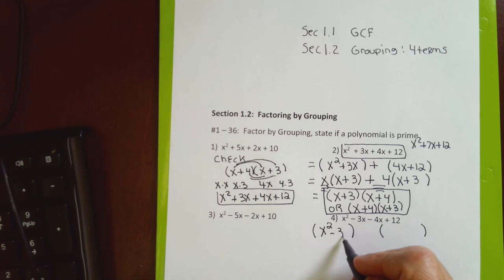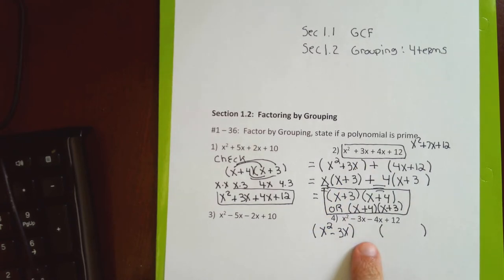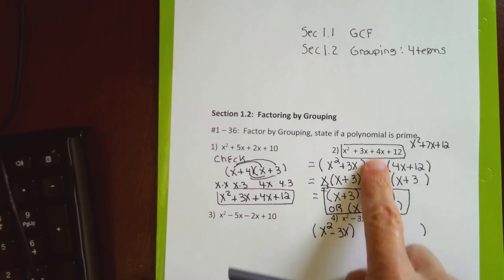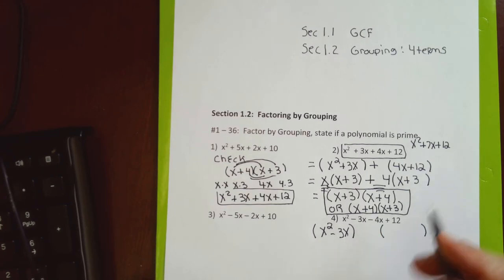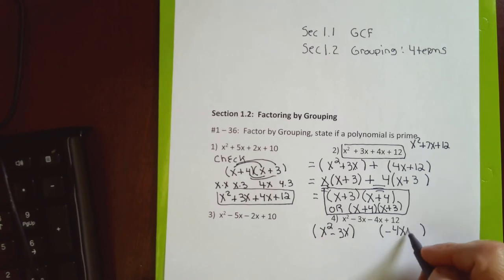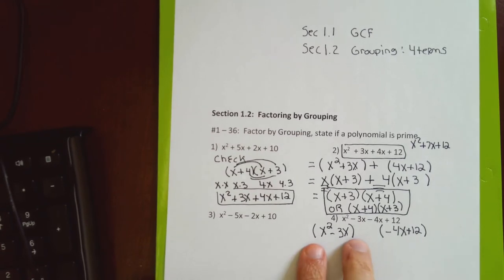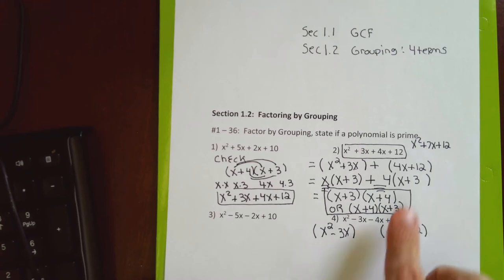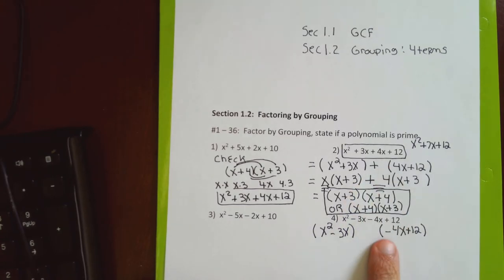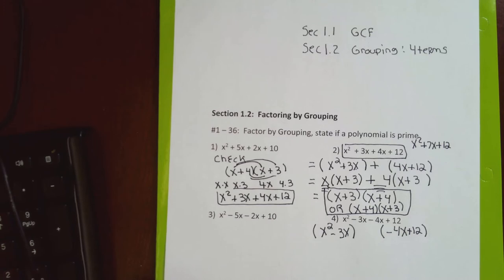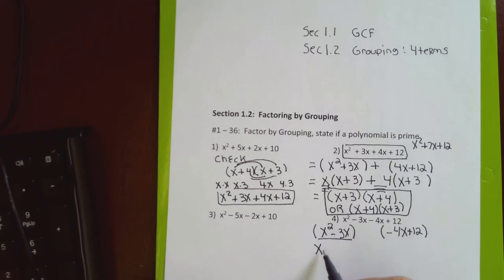Inside the first parenthesis I put the first two terms, just like in problem 2. Unlike problem 2, here the middle sign is minus. The only big trick: if the sign between the two groups is minus, I put it inside the second parenthesis. The first two terms always go in their own parenthesis. If the sign in front of the second two terms is plus, it goes in front; if minus, it goes inside.